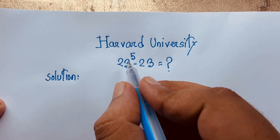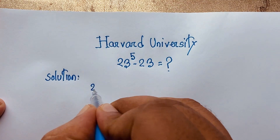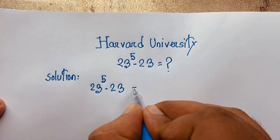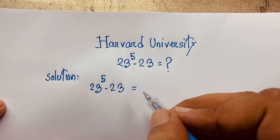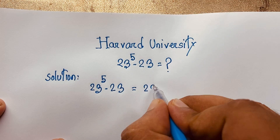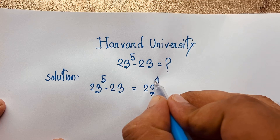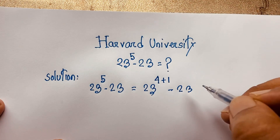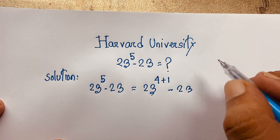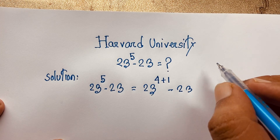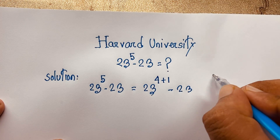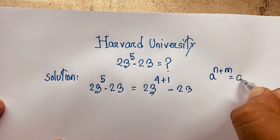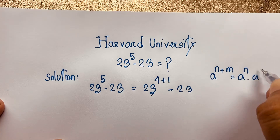Our question is 23 to the power 5 minus 23. Now you can see this 23 here. The exponent 5 can be written as 4 plus 1, so it becomes 23 to the power (4 plus 1) minus 23. According to the exponential formula, a to the power (n plus m) equals a to the power n times a to the power m.